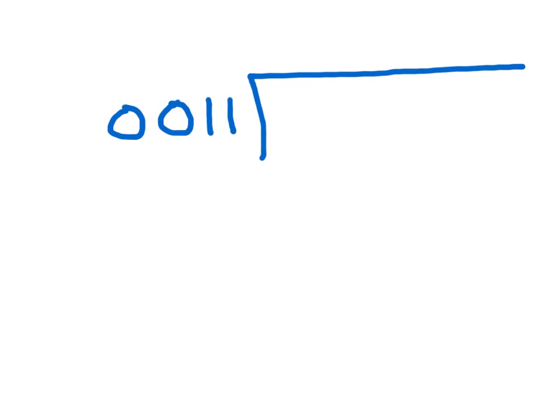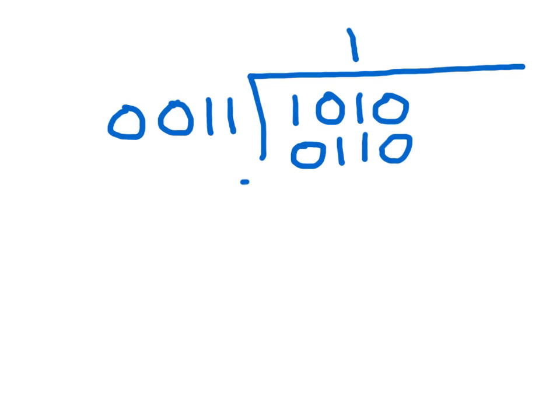Now let's suppose we have 3 into 10. We know this is going to have a remainder. The answer isn't 1 because that would give 3. If the answer was 2, we'd get 6. If the answer was 4, that would be 12, which is too high. So let's put a 1 in the 2's place, and multiplying this number times 2 is just adding a 0 at the end, giving us 0110. Subtracting: 0 minus 0 is 0, 1 minus 0 is 0, 2 minus 1 is 1, and we're left with 4.